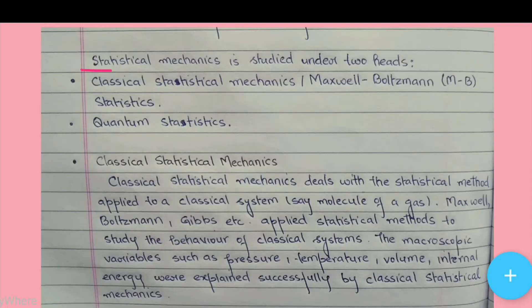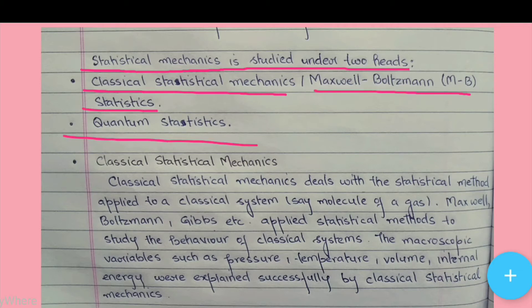Statistical mechanics is studied under two heads: classical statistical mechanics, also called Maxwell-Boltzmann statistics, and quantum statistics.